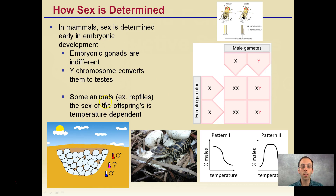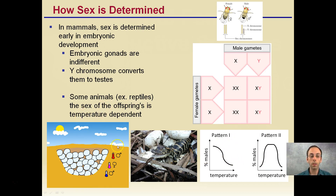In some animals — for example, reptiles — the sex of the offspring is temperature dependent. We see this in these graphs and in this representation. If the temperature is cool or very warm, the offspring will be predominantly male. If the temperature happens to be in the middle of these two ranges, the eggs will be predominantly female. In alligators, you can have an entire nest be either male or female. Depending on the organism, the temperature range can influence the percentage of males that will hatch from these eggs.